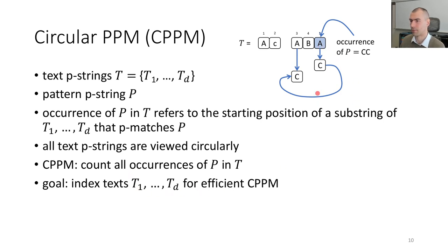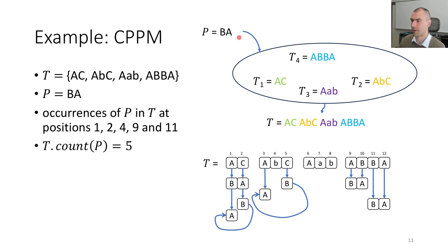For instance, here you have a p-match for CC if you just wrap around, because you have an A here and an A here. A more elaborate example: with pattern B-A and a text collection which you can linearize with spaces in between, you can see a match for C mapping to B-A, or wrapping around to find another match, or even non-wrapped matches. So you get a count of five.